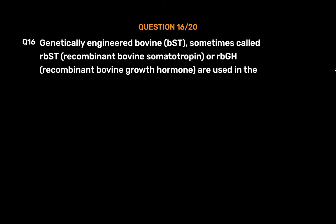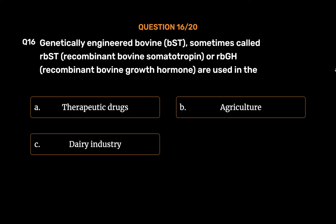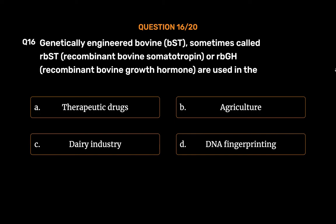Question 16: Genetically engineered bovine BST, sometimes called rBST (recombinant bovine somatotropin) or rBGH (recombinant bovine growth hormone), are used in the — Option A: Therapeutic drugs. Option B: Agriculture. Option C: Dairy industry. Option D: DNA fingerprinting.